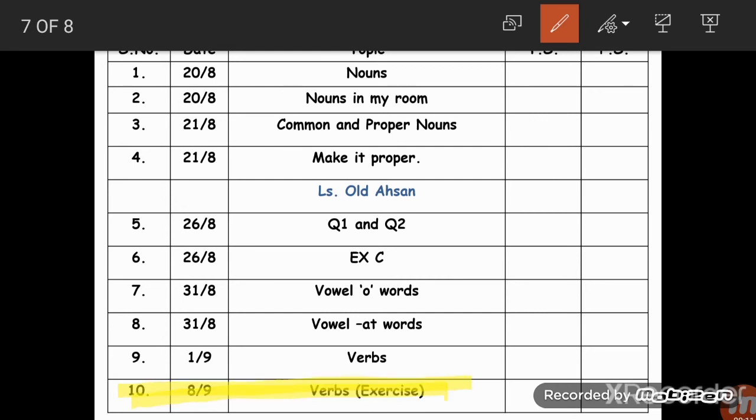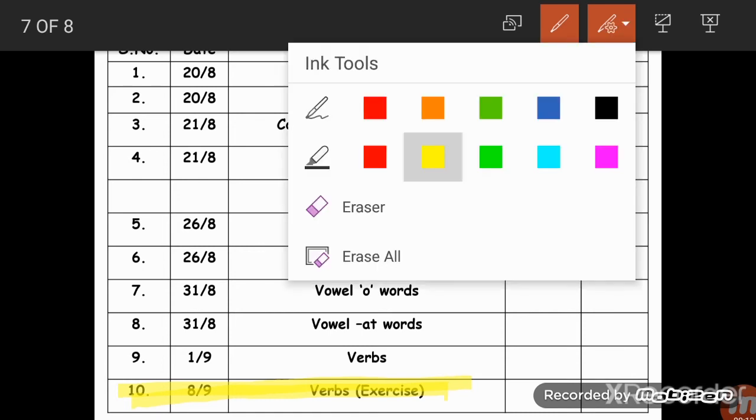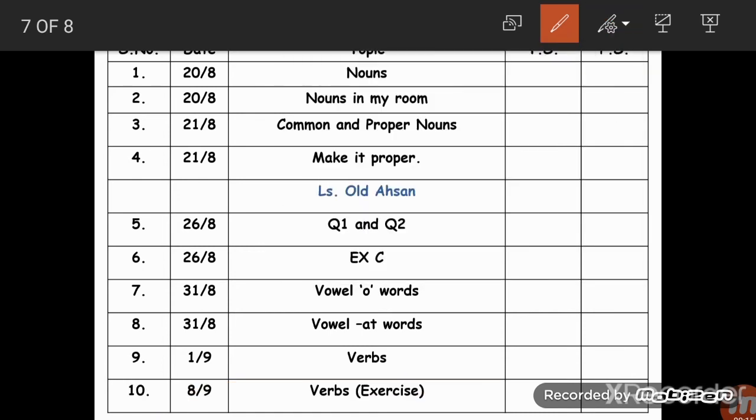This one is your today's index. You will write number 10, 8th September. As you all know September is 9th month, so we are going to write 8 slash 9. And we are going to do the exercise of verbs, so verbs and you can write exercise in brackets.